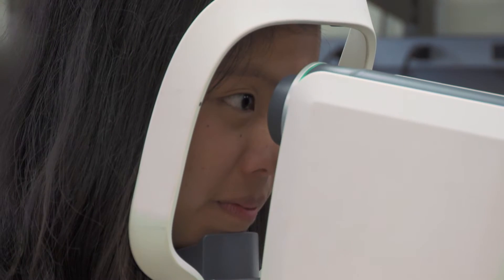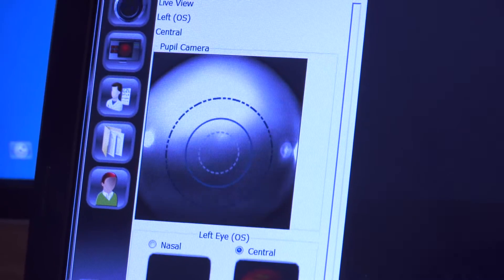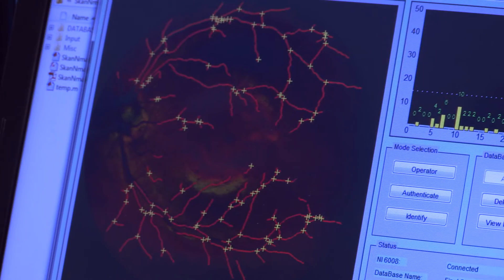Given two retinal vasculatures, how do you compare them and determine whether these two retinas belong to the same person or if they're from two different people?